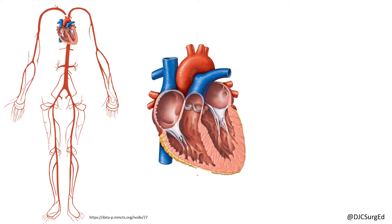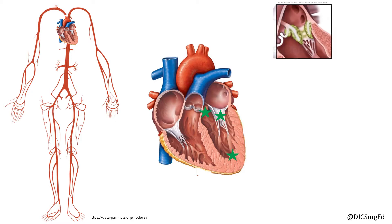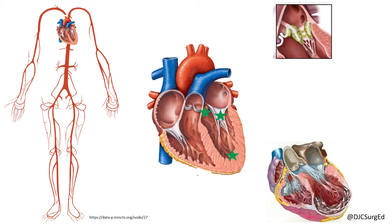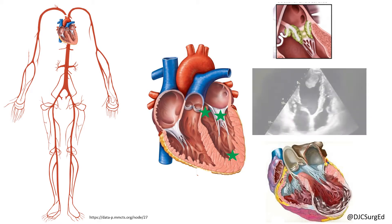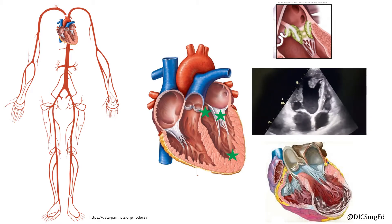Moving through the heart, we travel through the mitral valve, left ventricle, and aortic valve. Debris from prosthetic valves or septic emboli due to endocarditis can be potential sources. A patient with a history of a prior myocardial infarction and left ventricular dysfunction or aneurysm can also form a thrombus. An echocardiogram can evaluate the heart for dysfunction or valvular disease. Here we see a left ventricular thrombus.